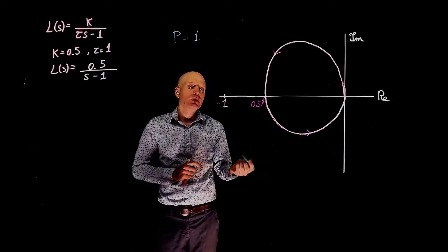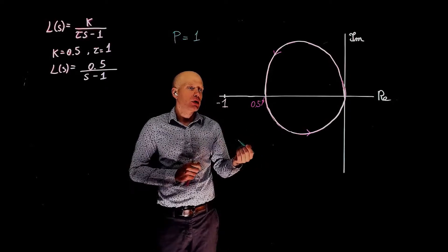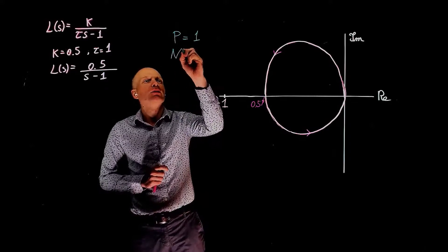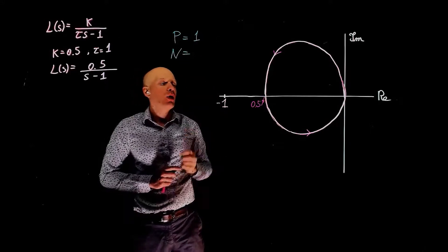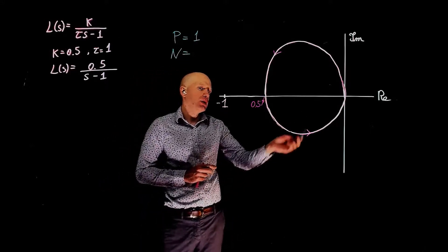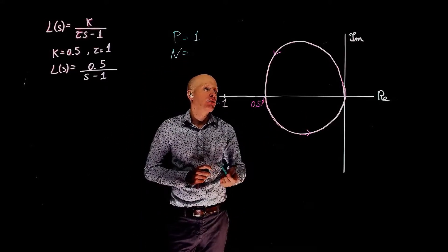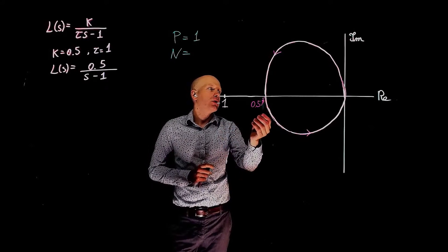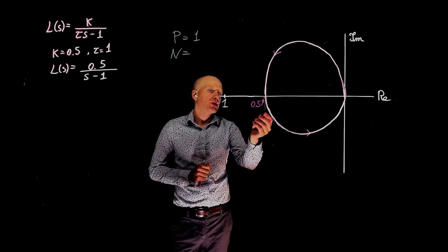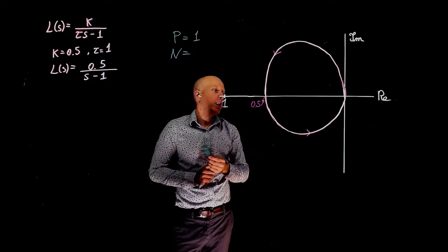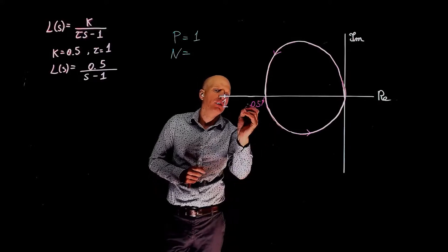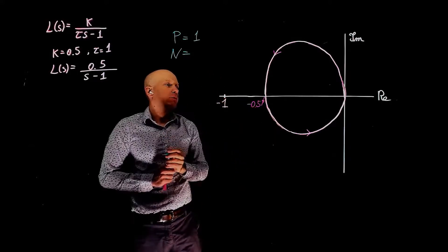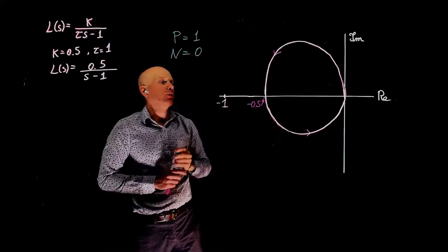The second thing we need is the number of encirclements of negative 1, that is N. How many times does the Nyquist plot encircle negative 1? We see that negative 1 is here, and the Nyquist plot crosses the real axis at negative 0.5. So the number of encirclements in this case is 0.